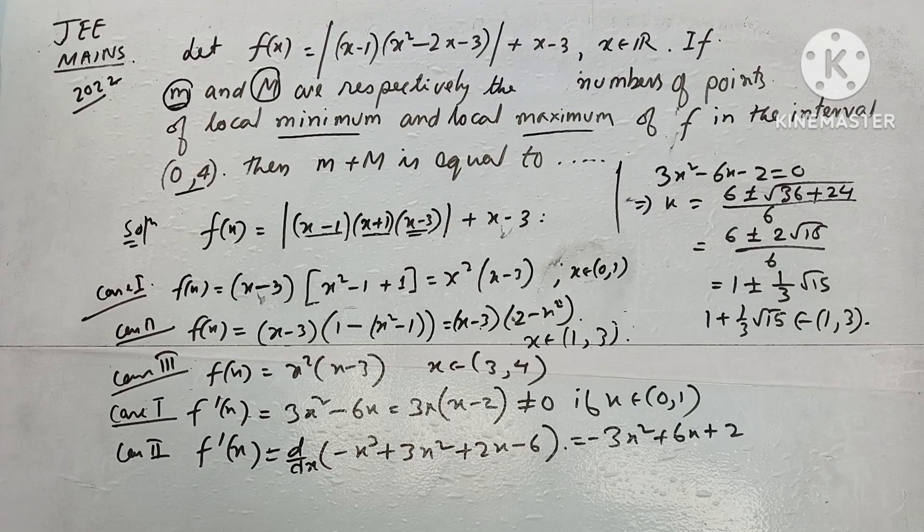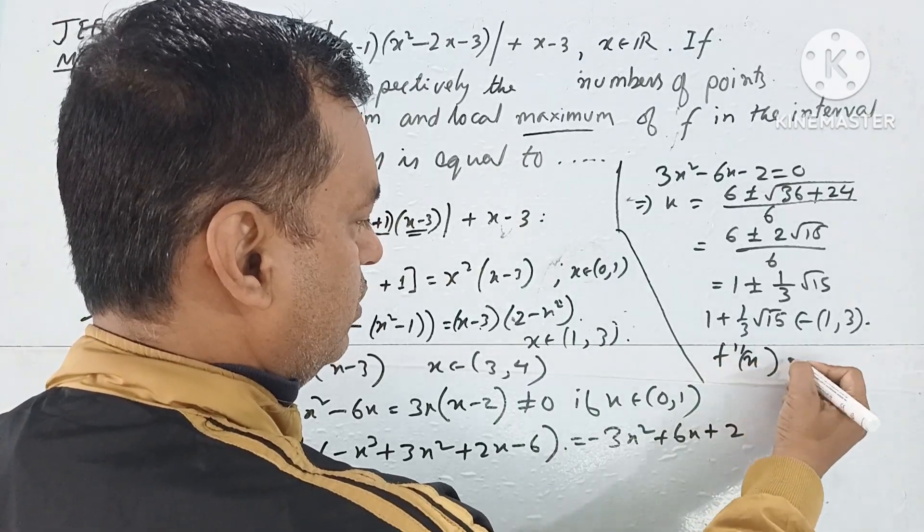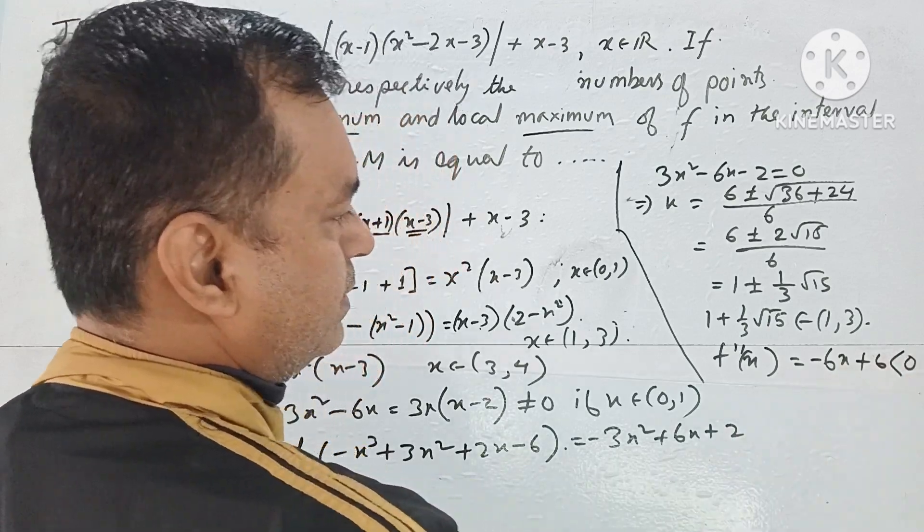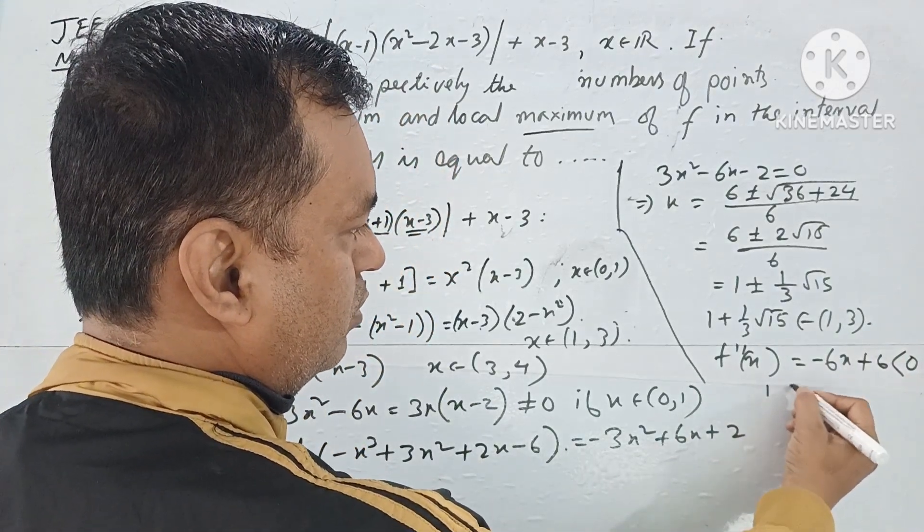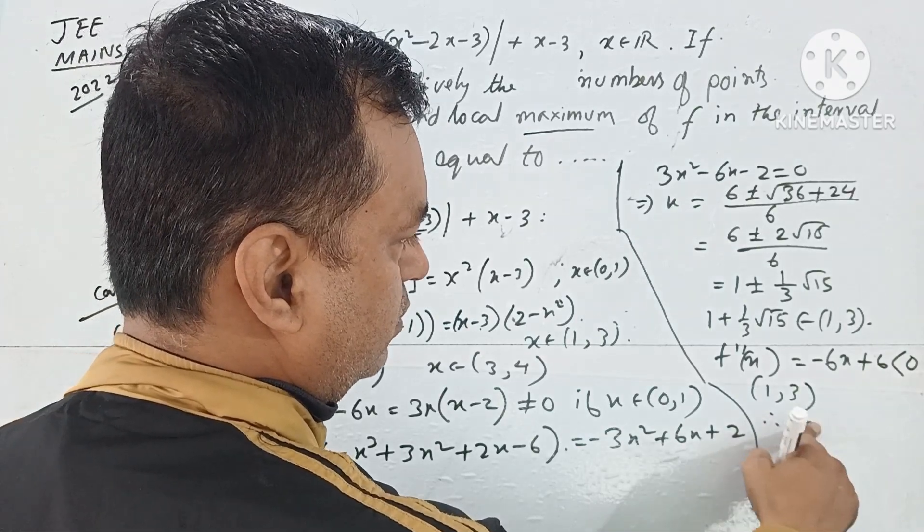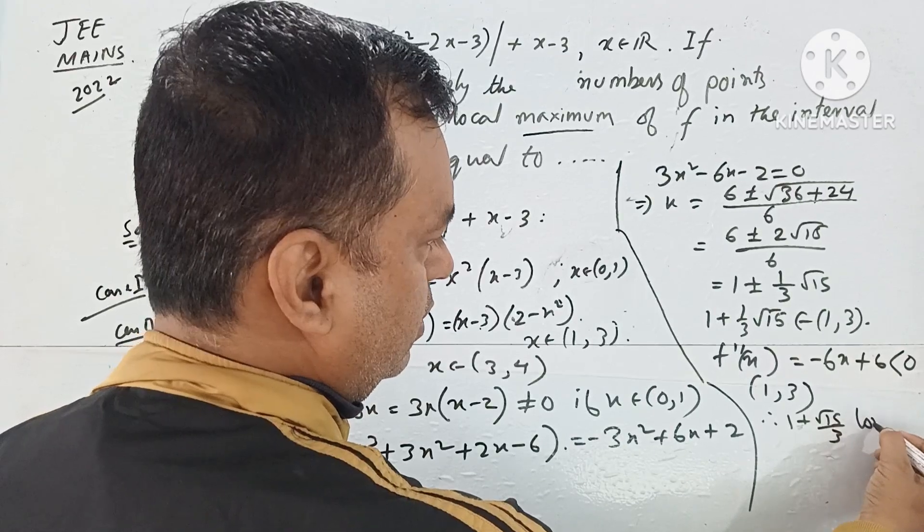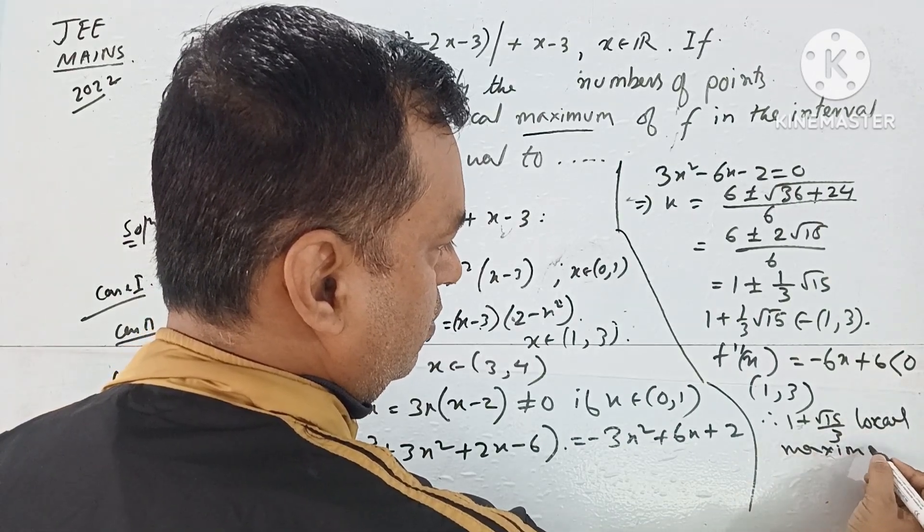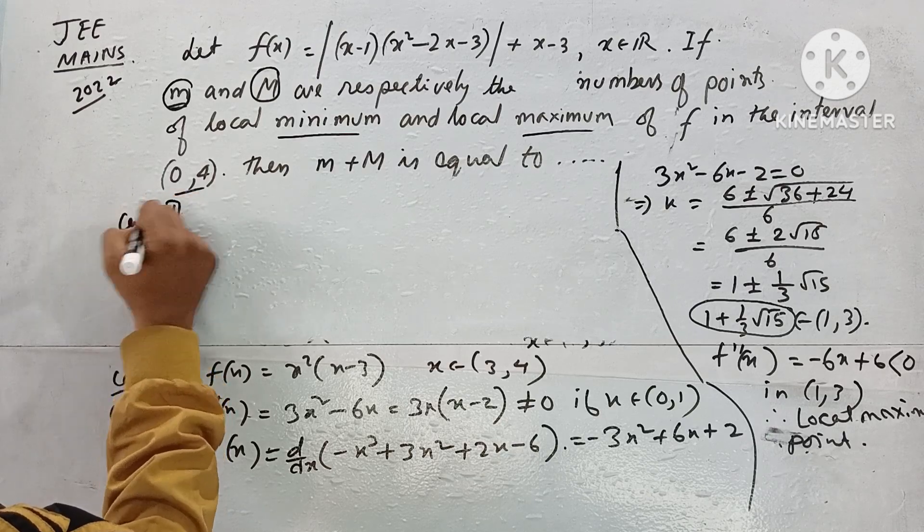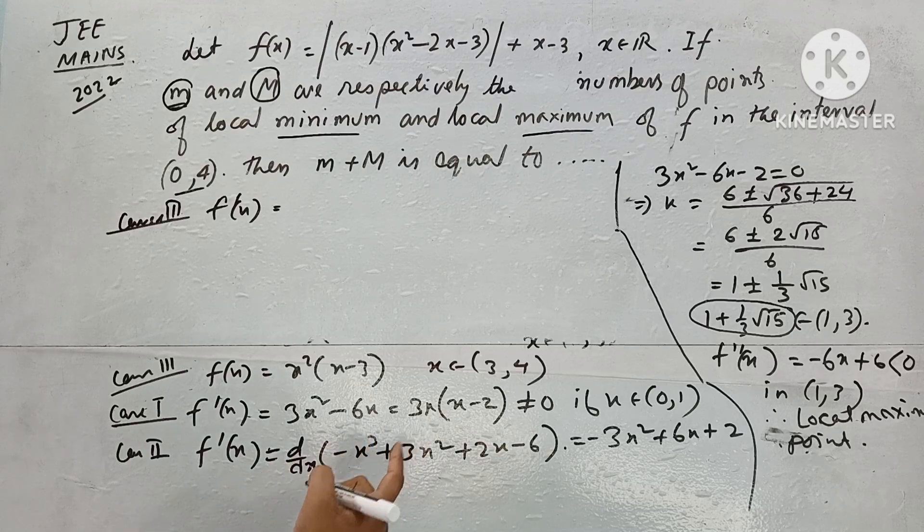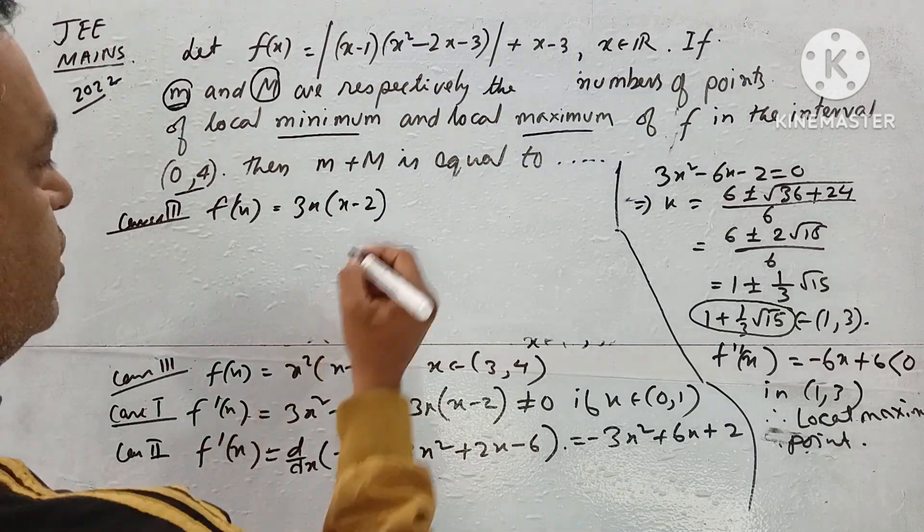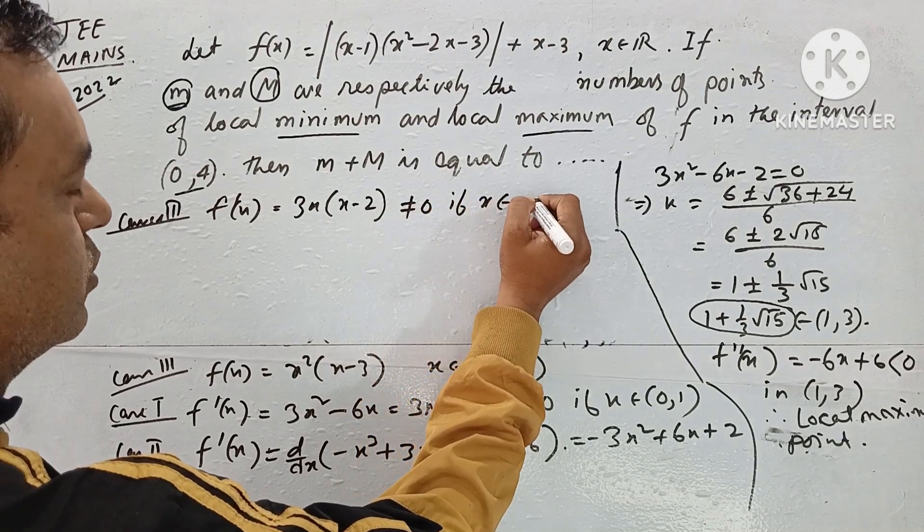So here we have local maxima, maximum at x = 1 + √15/3 is a local maxima point. Case 3: f'(x) is 3x(x-2). This is not equal to 0 if x belongs to (3,4), so no local maximum or minimum in (3,4).